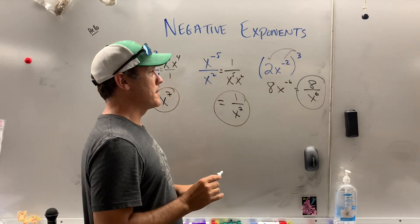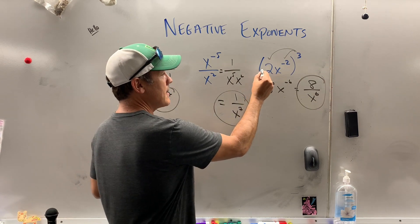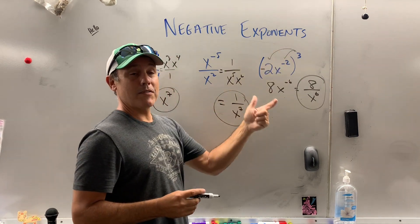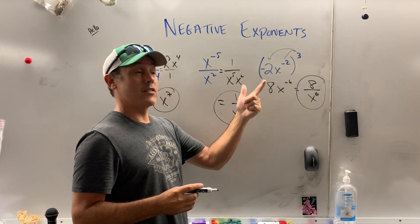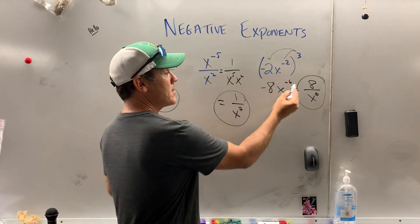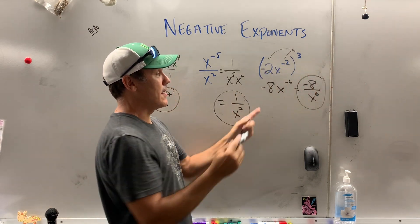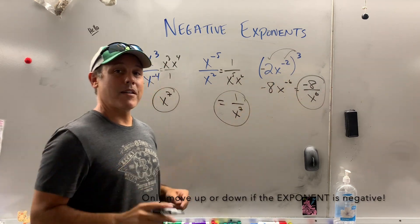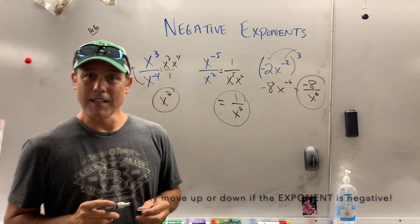Now, just so we're clear about this negative and positive business, what if I had a negative there? What is negative 2 cubed? Negative 2 times negative 2 is 4 times negative 2 is negative 8. This negative 8 would have stayed there. You only move if the exponent is negative. That, my friends, is how we deal with negative exponents.